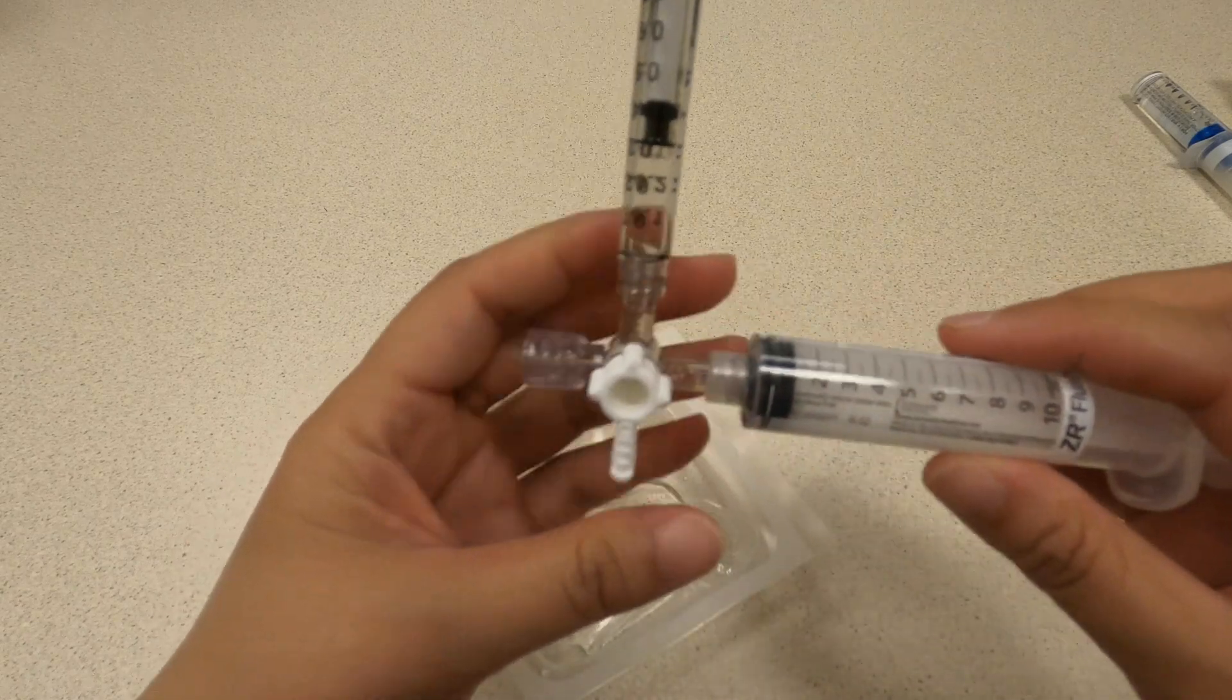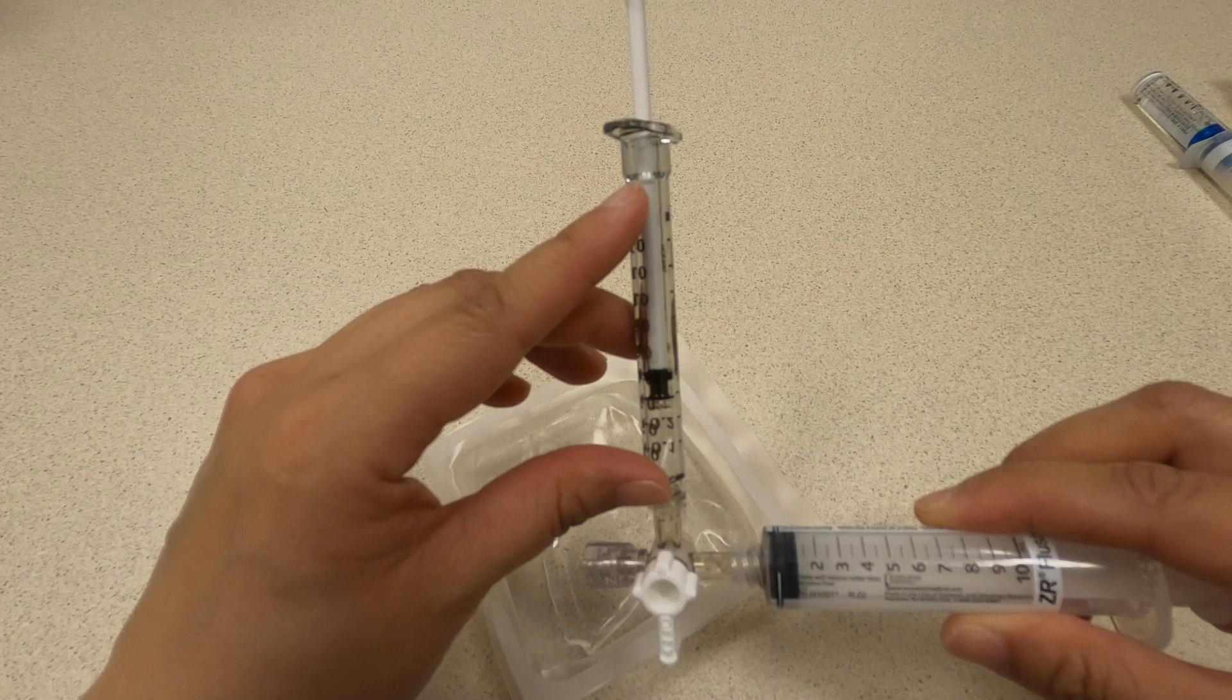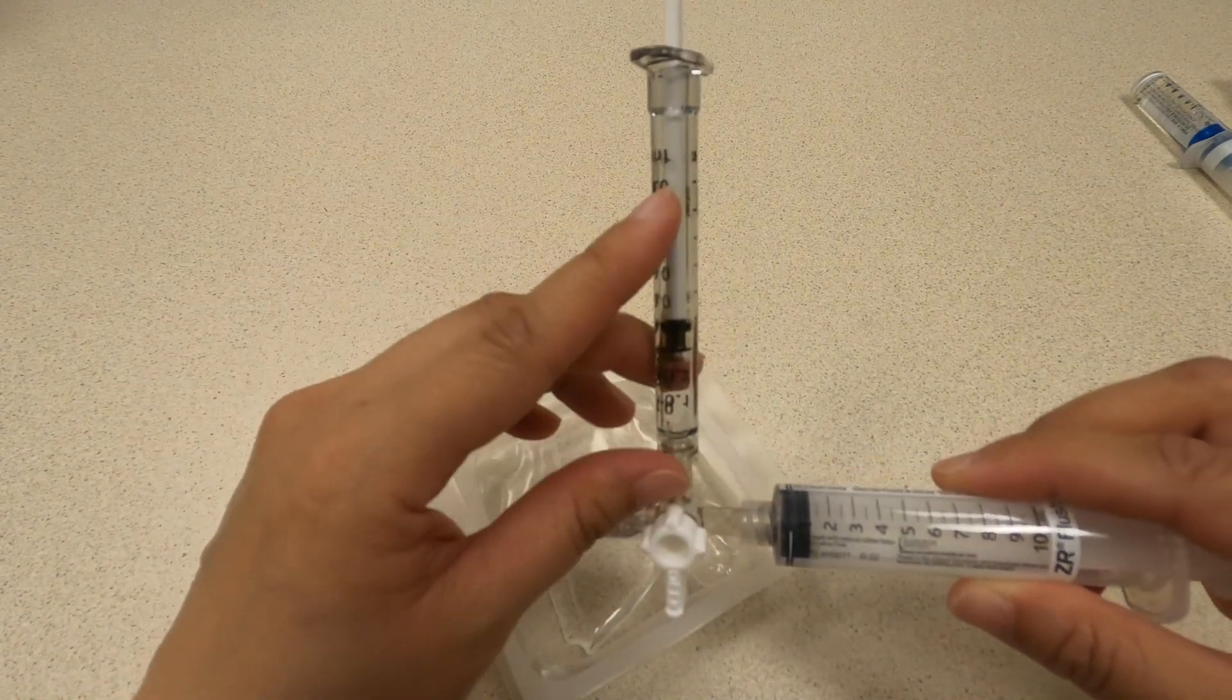For children less than 10 kilos, it's okay to dilute out these small doses to the full 1 ml using normal saline. Obviously sterile normal saline using aseptic technique.